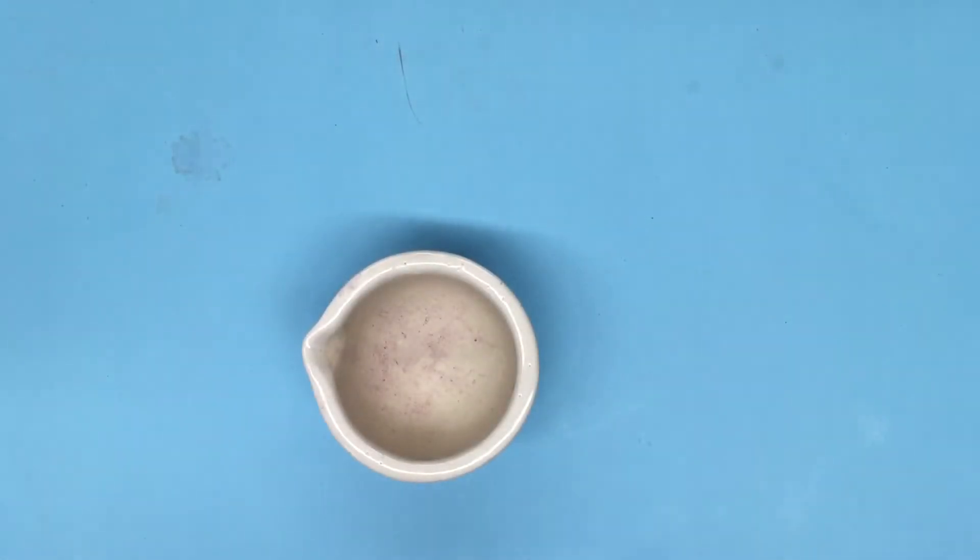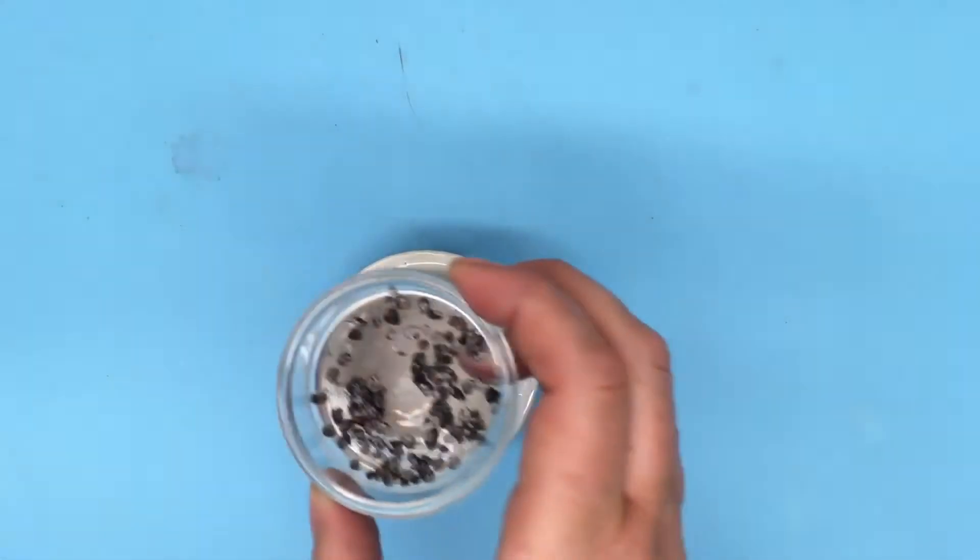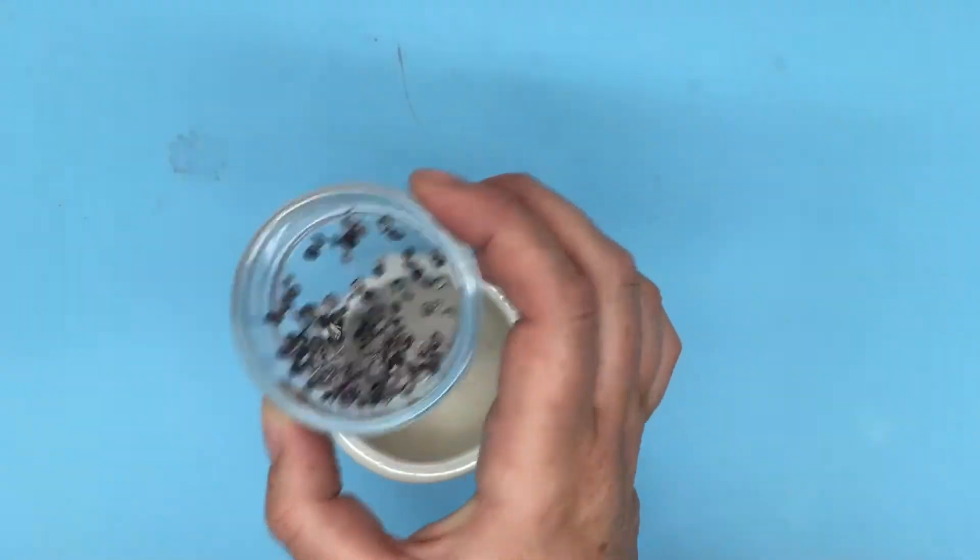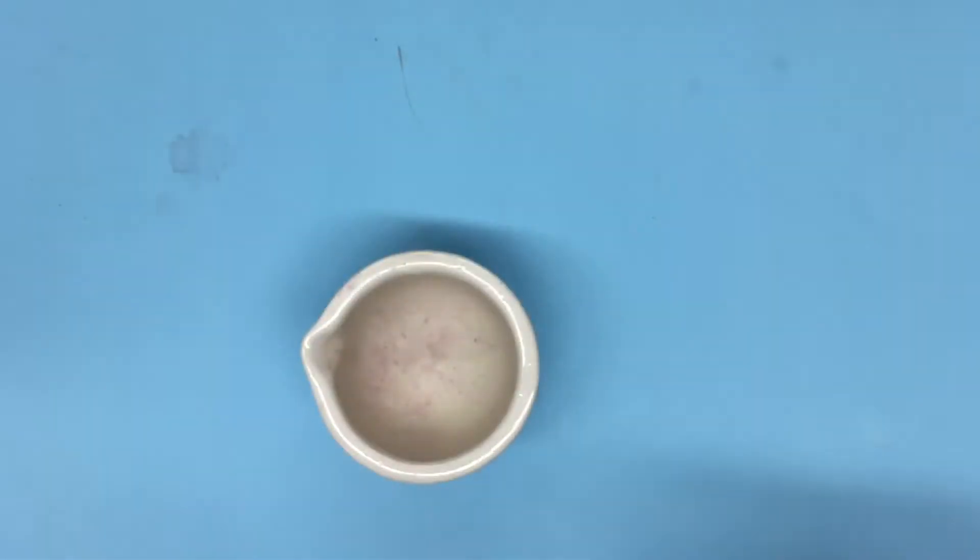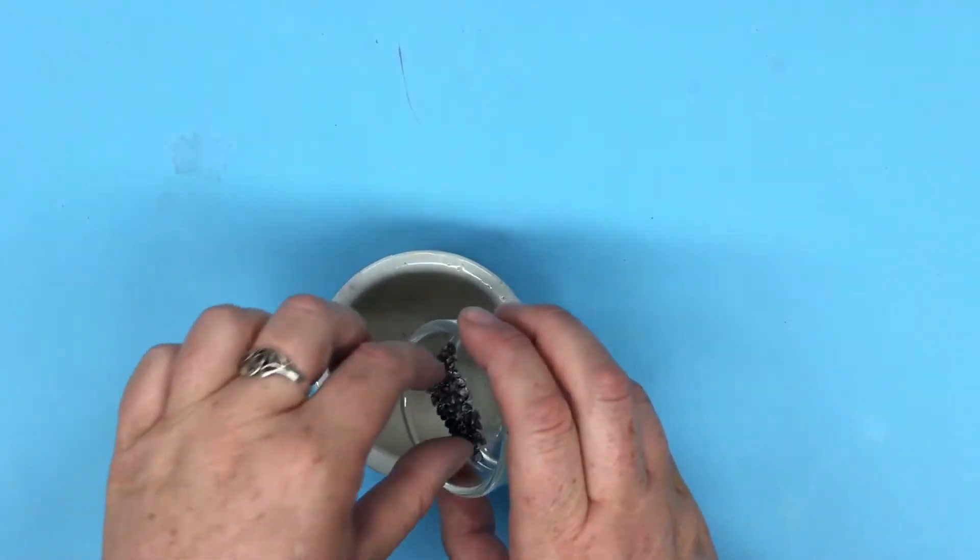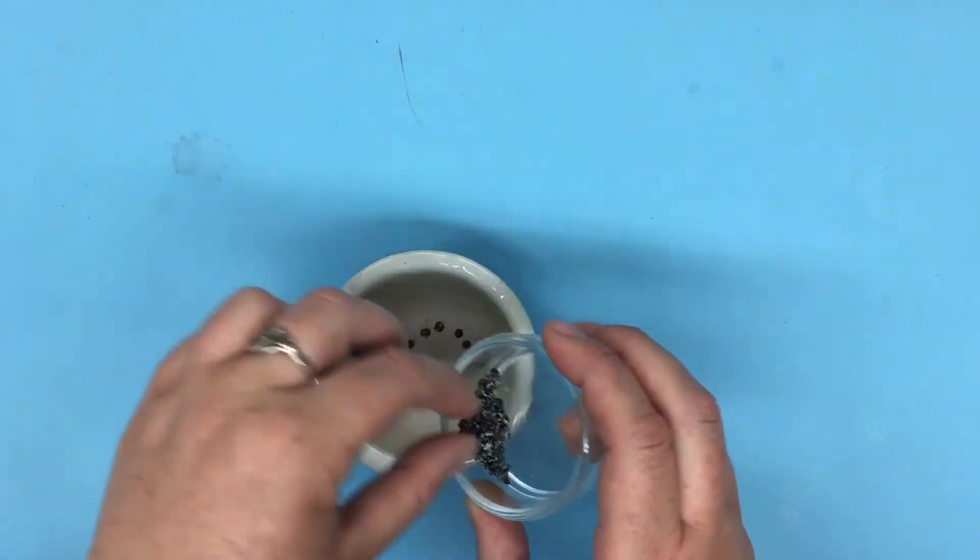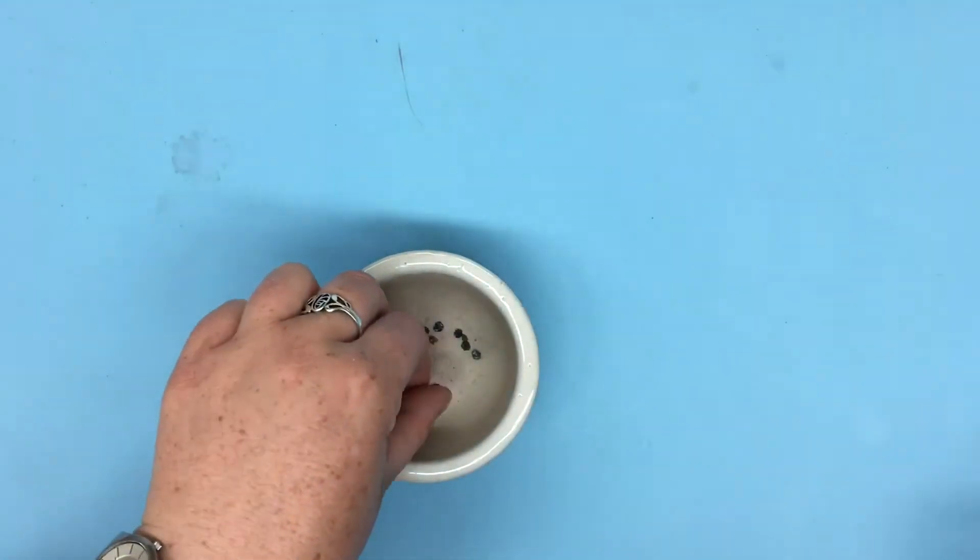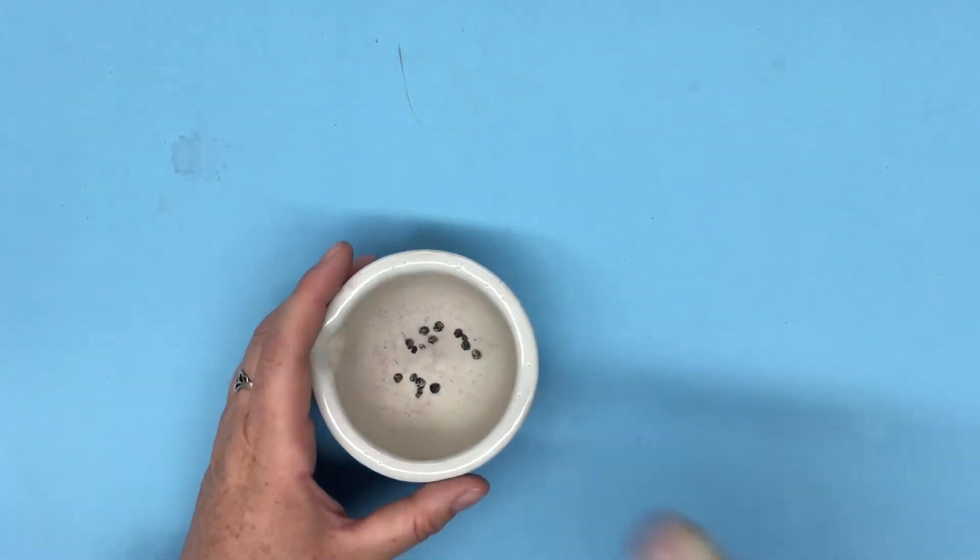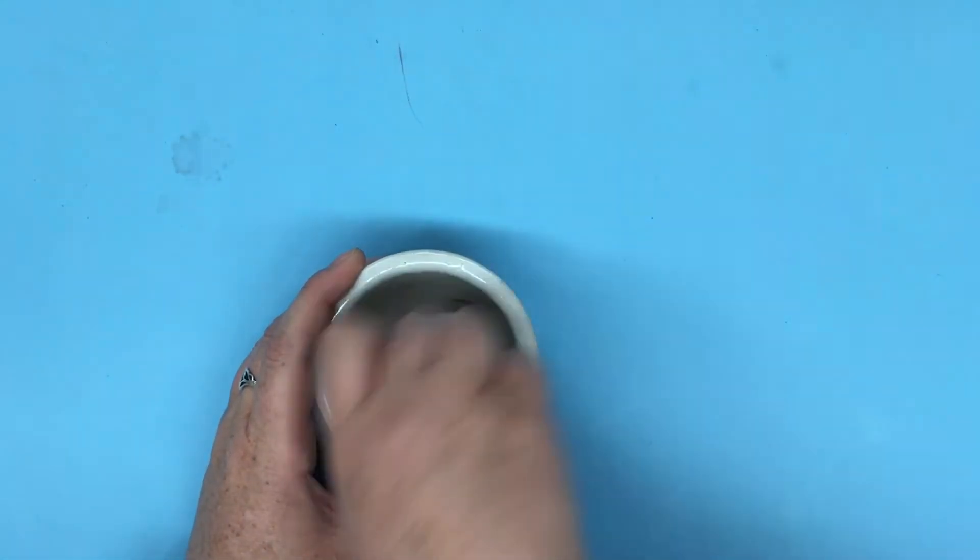Dactylopius coccus is an insect that grows on the prickly pear cactus in South America. The female insects contain carminic acid, and when they're ground up and dried, they release that deep red color carmine.